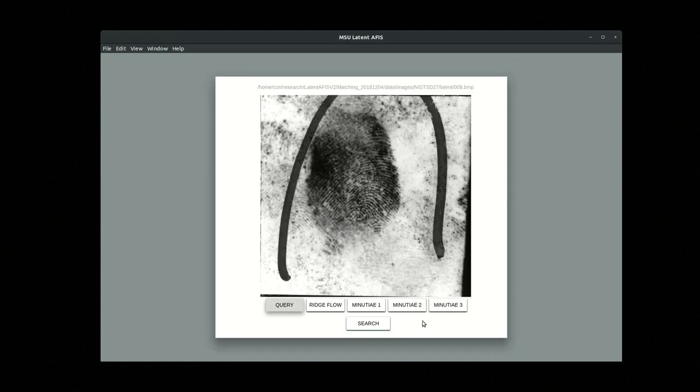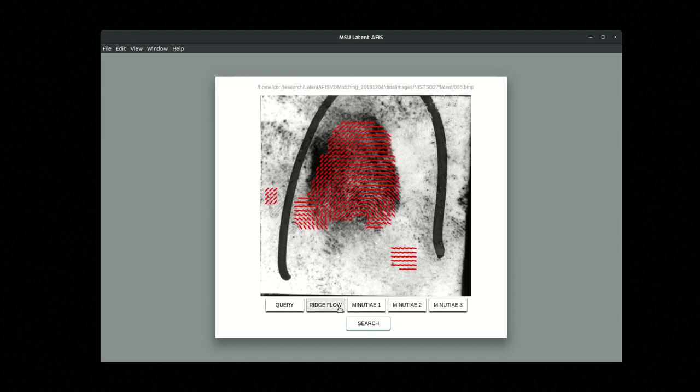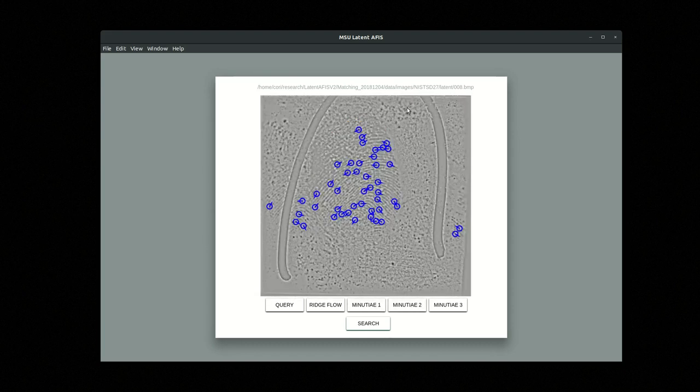We'll use this one. Now when we confirm our choice, the first thing we're going to see is the result of that feature extraction process that I explained previously. So we're going to see things like the ridge flow, and you can see that this is bounded by the ROI, the region of interest that was detected.